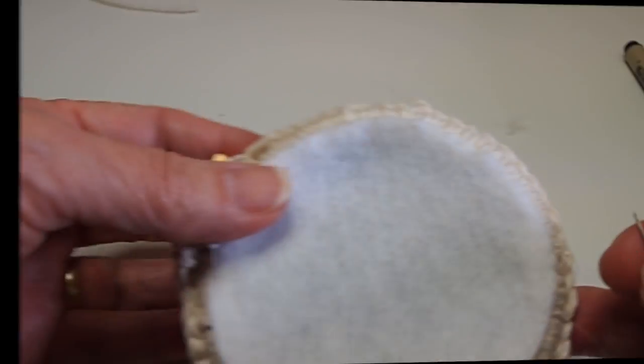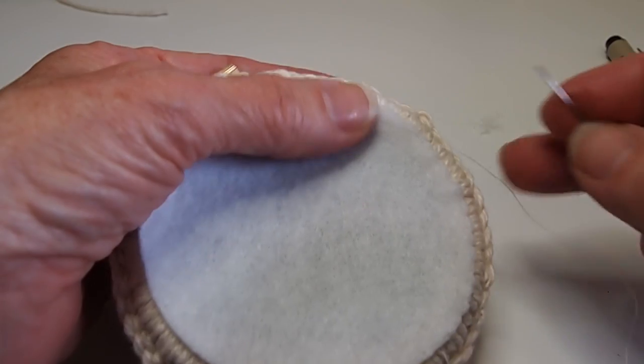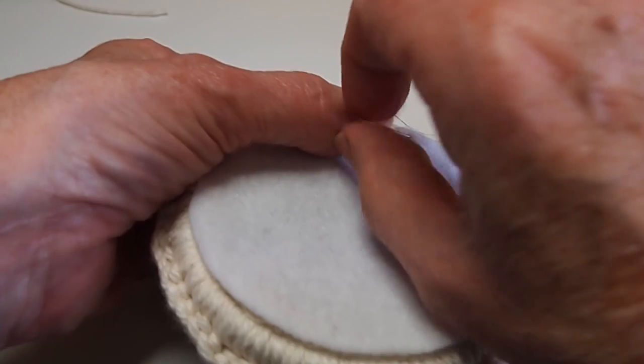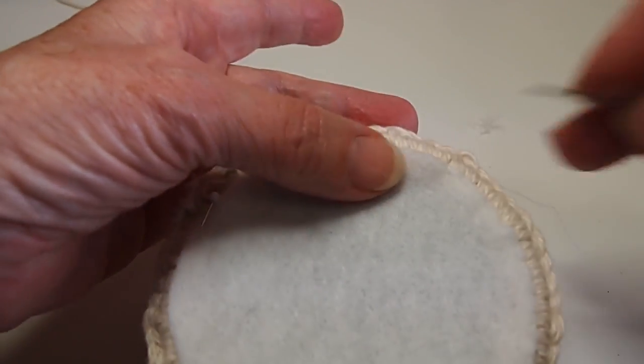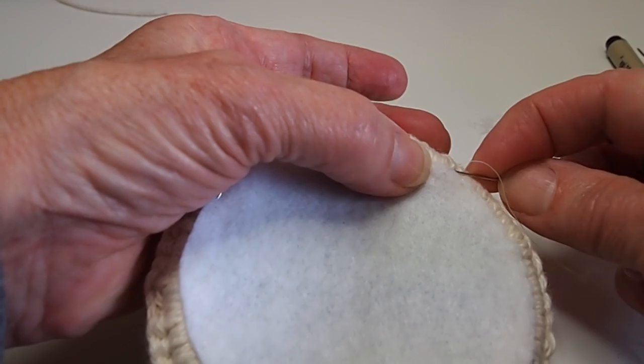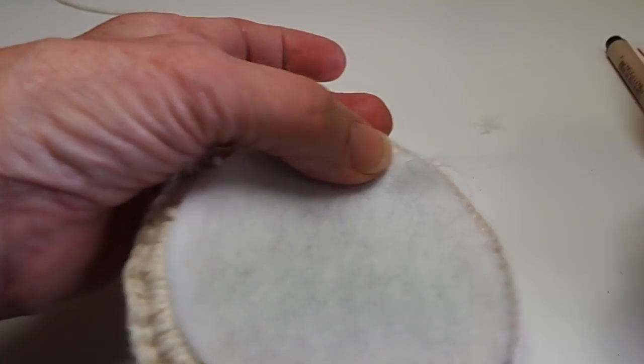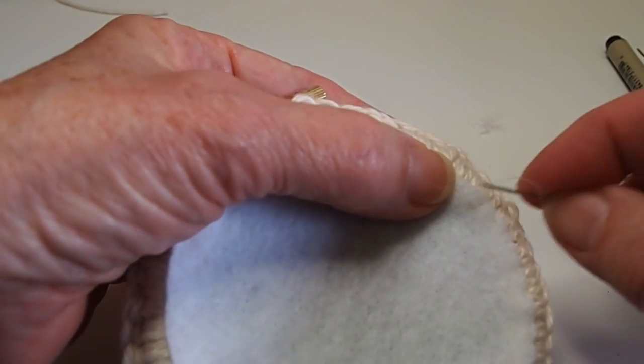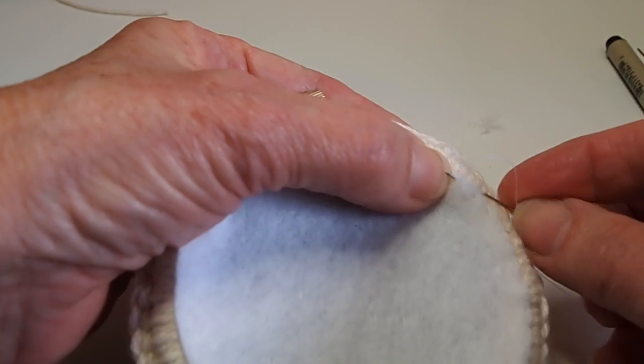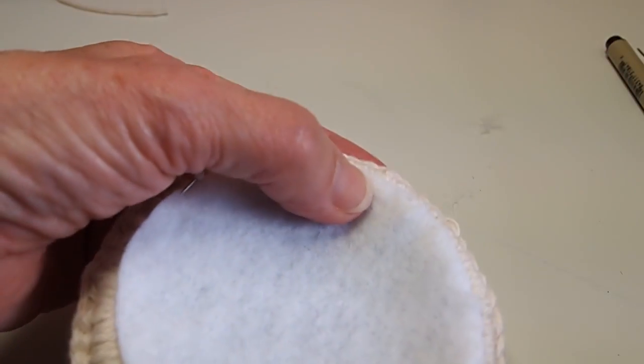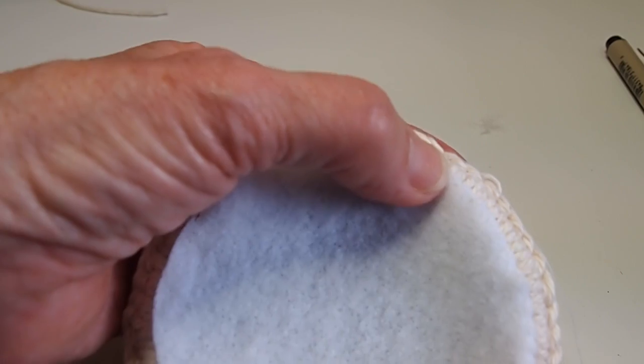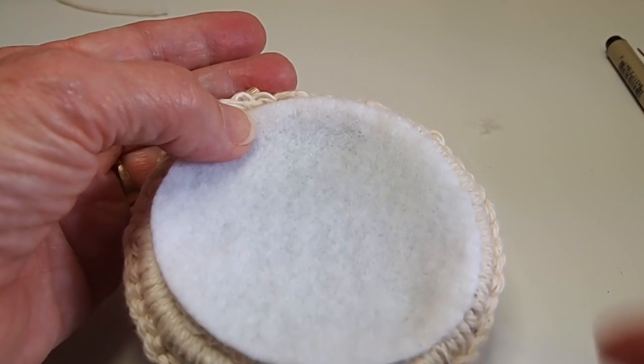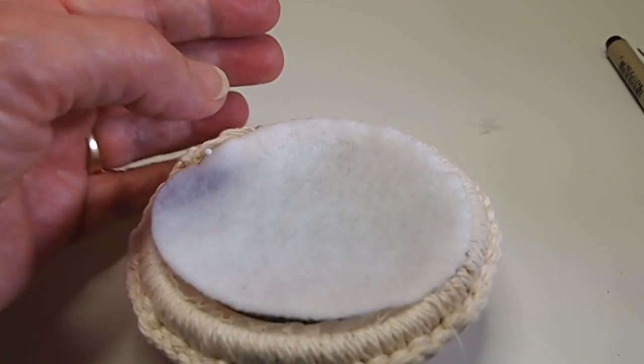Once you have that all trimmed up nice and clean, you're going to grab your piece of felt that we cut earlier and place it on the back so that it covers the trimmed off edge. Then you're just going to get a needle and thread and neatly sew all around the edge. This gives the bottom of the pin cushion a nice finished look to it.